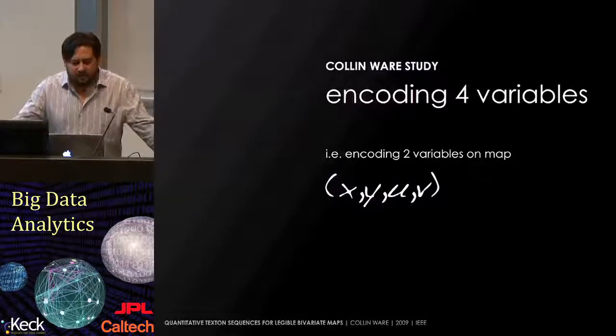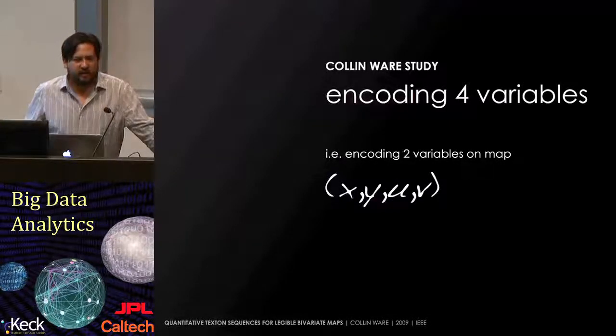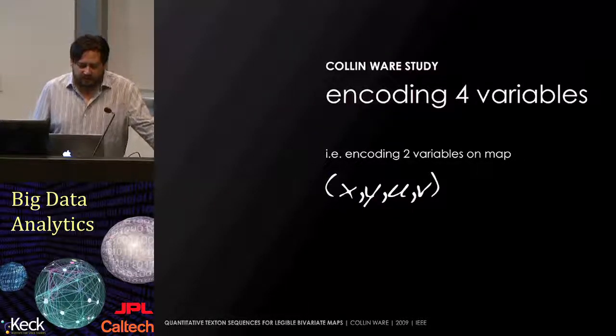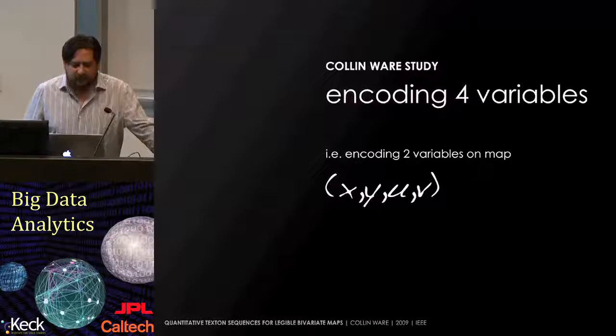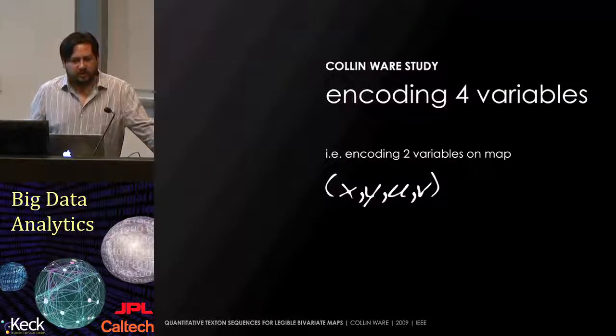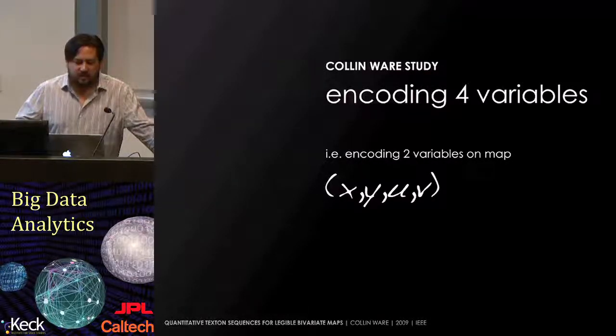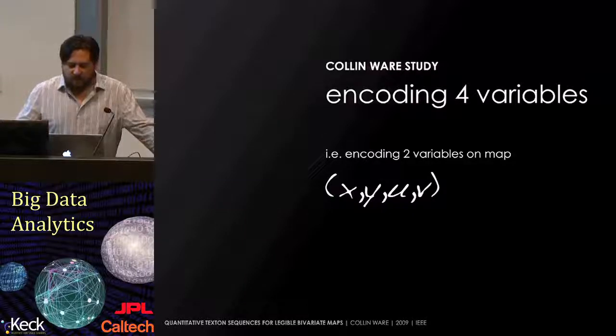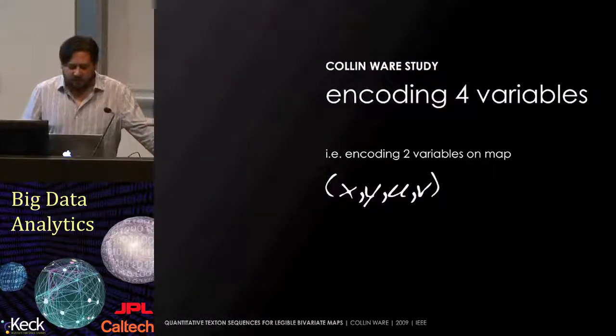Let's talk a little bit about what it means just to visualize four data variables, and how you would go about it. There was a really good study done by Colin Ware in 2009 that tried to encode two variables on a map. So that means you have x and y positions for different points in a map, plus two different variables. In this case, we're talking about water temperature, as well as water salinity.